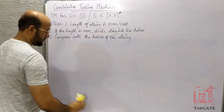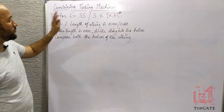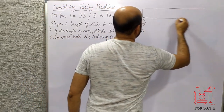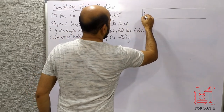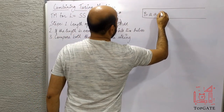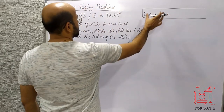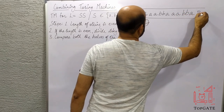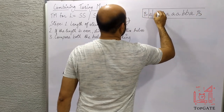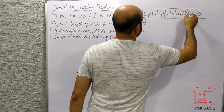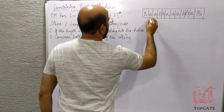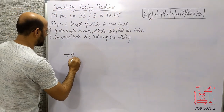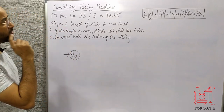We have to design a Turing machine for the language L equal to SS, where S is a combination of A and B including lambda. Let us take our input tape: a blank, then the string AABBA for the first part, then AABBA again for the second part, followed by several blanks. The read-write head is currently on the first cell. We start with initial state Q0.